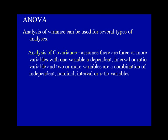Analysis of covariance assumes there are three or more variables, with one variable a dependent interval or ratio variable, and two or more variables that are a combination of independent nominal, interval, or ratio variables.